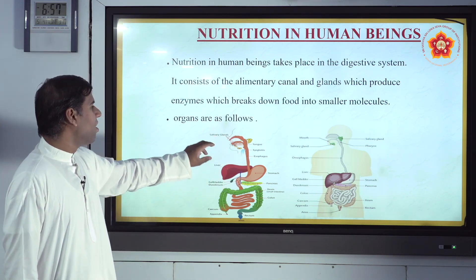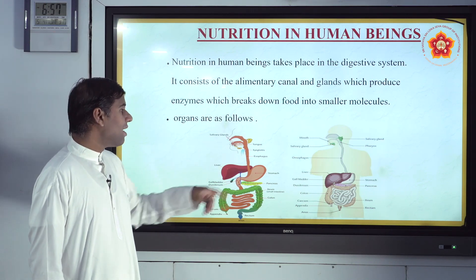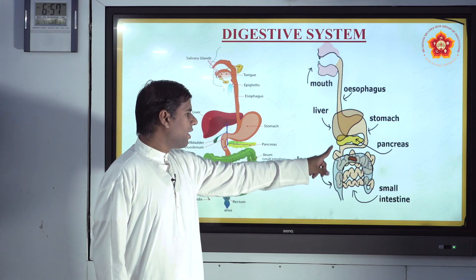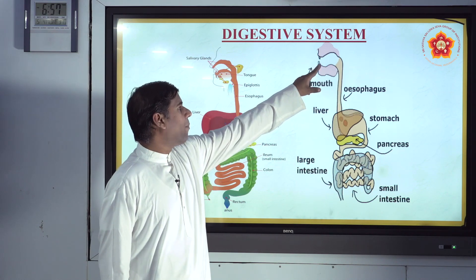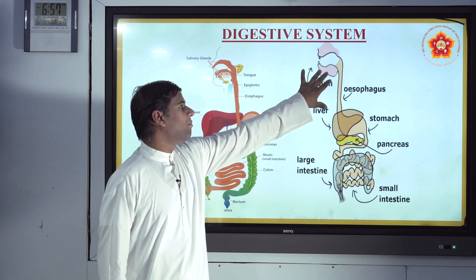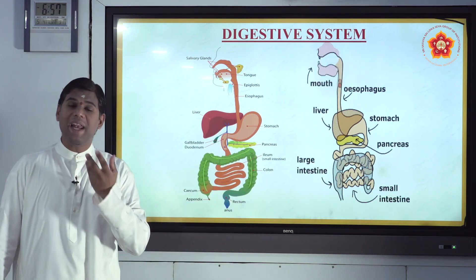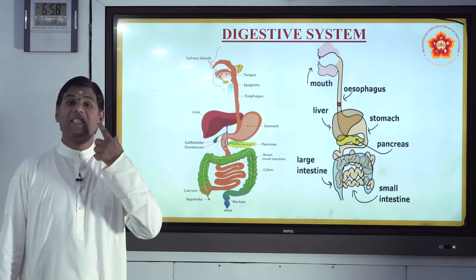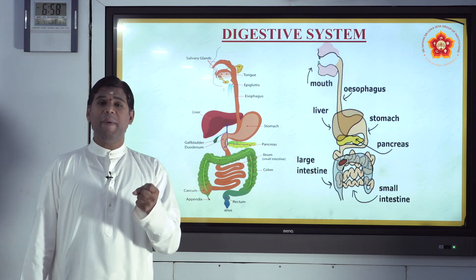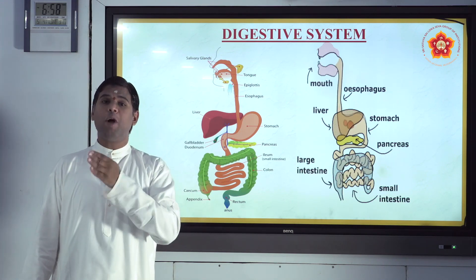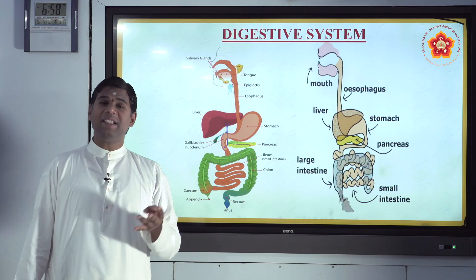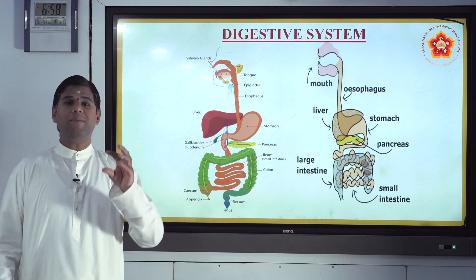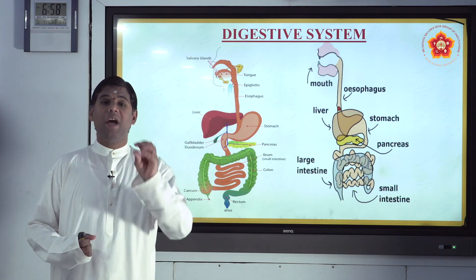The process starts in the mouth itself. In the mouth you have special enzymes — salivary amylase. Your saliva is nothing but this amylase enzyme, secreted by the salivary glands. It mixes with food to soften it, and your teeth — canines, incisors, premolars and molars — chew and break it into smaller particles. These smaller particles form a bolus, which is a round ball of food.